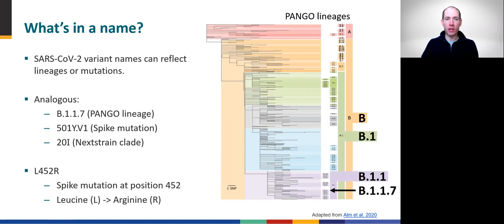Alternatively, some variants are named for one specific defining mutation, such as L452R, which references an amino acid substitution at position 452 in the spike protein. Although researchers assign such names based on mutations of interest, these variants often still represent clades within the phylogenetic tree defined by a genetic fingerprint of many mutations.